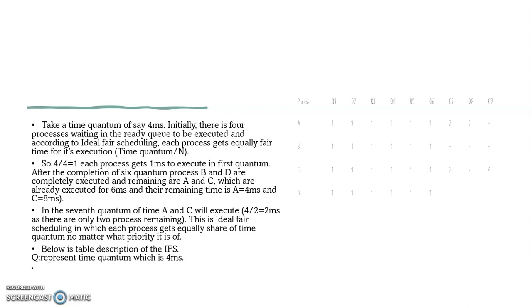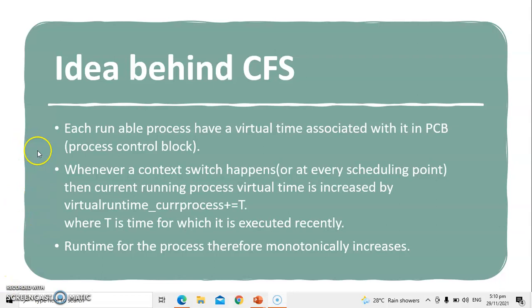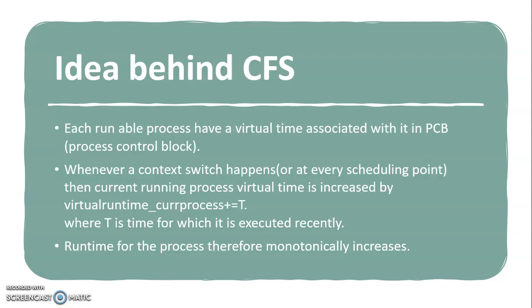CFS is similar to ideal fair scheduling, but instead it prioritizes each process according to their virtual runnable time. The idea behind CFS is that each runnable process has a virtual time associated with it in the PCB (Process Control Block). Whenever a context switch happens or at every scheduling point, the current running process's virtual time is increased by its virtual runtime: core_process += t, where t is the time for which it was recently executed. The runtime for the process therefore monotonically increases.